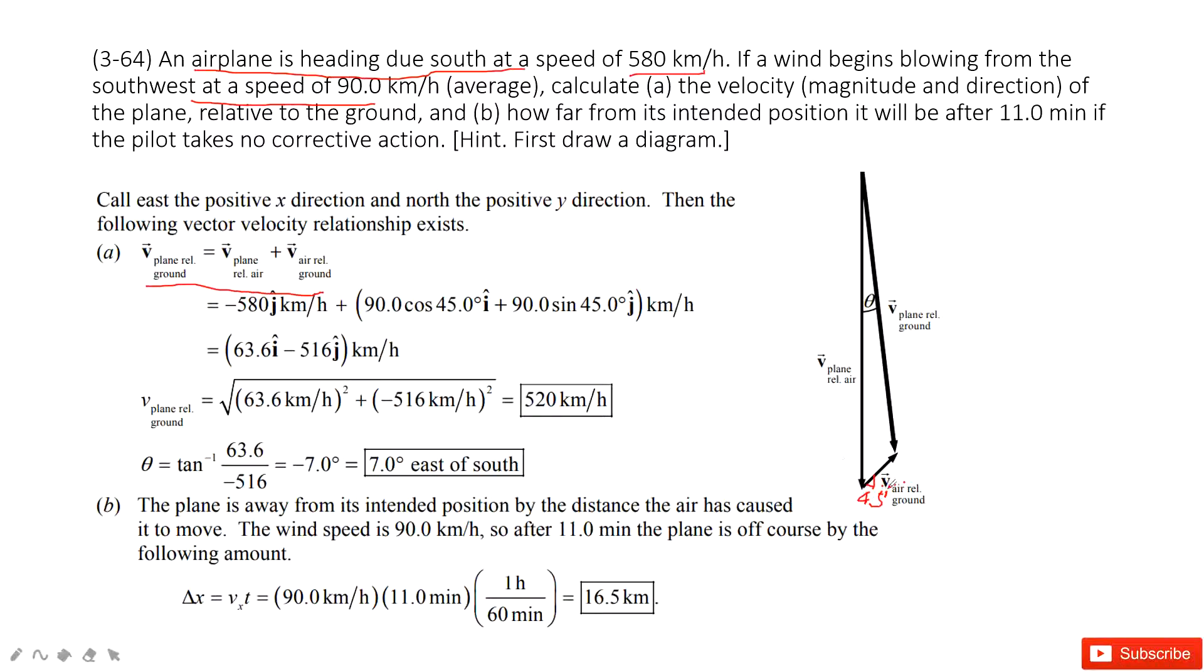The next one, we can do the velocity decomposition. We can see, we can write the velocity in two components, i component and j component. So it's easy. We find the velocity airplane to the air is negative 580 j, right? The j component. So it's negative.